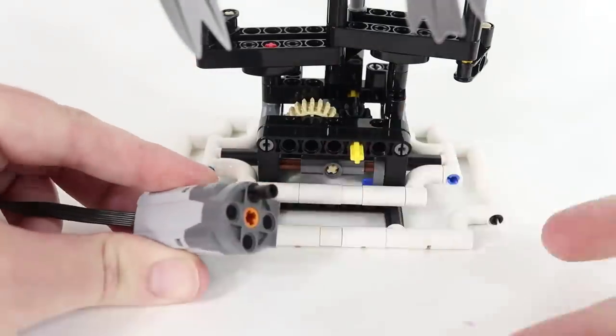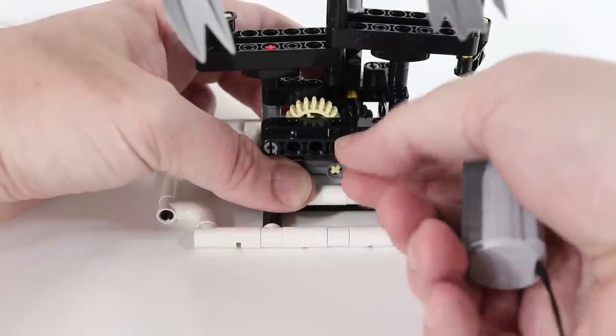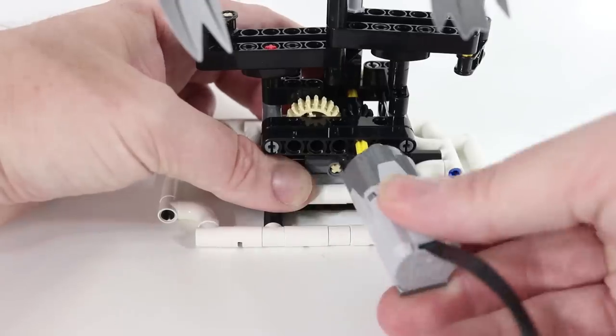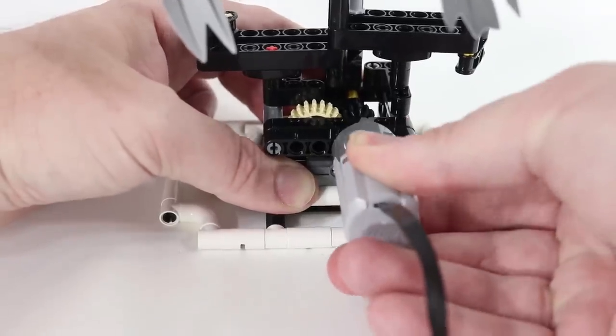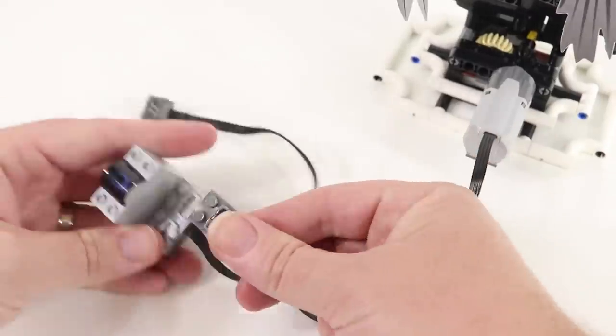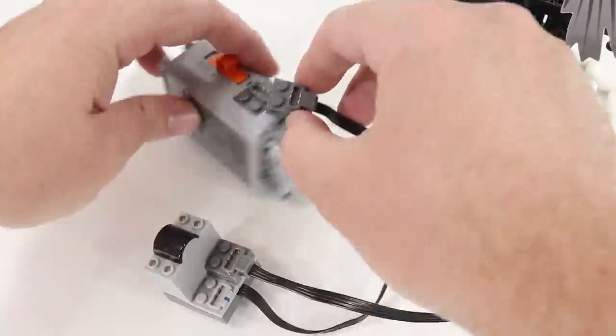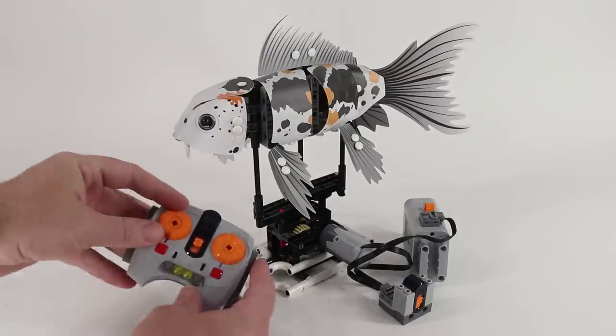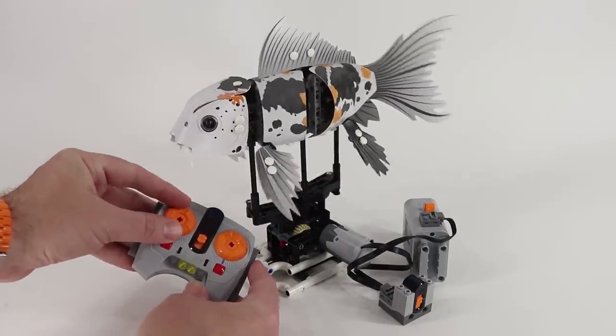The motor just needs two Technic pins, and with the drive axle in the right orientation, I can simply click the motor into place. I don't want to forget to put batteries in my Power Functions battery box. Then I can connect my IR receiver to the motor into the battery box and use my IR remote to get this fish swimming.